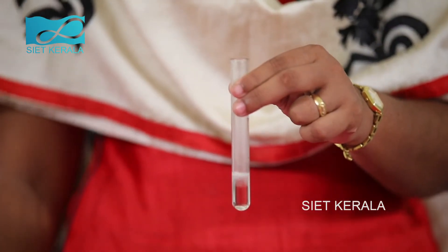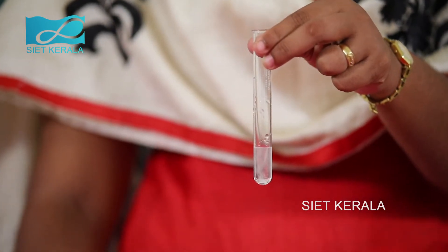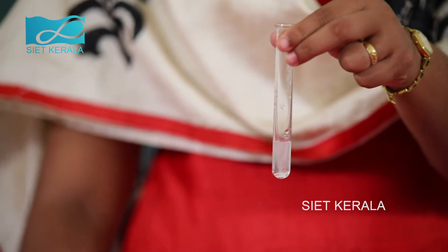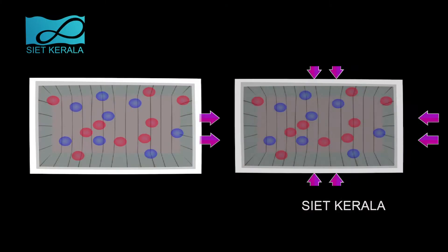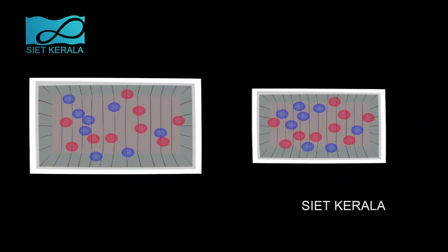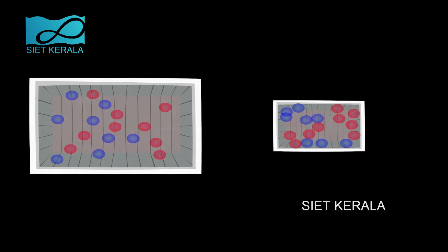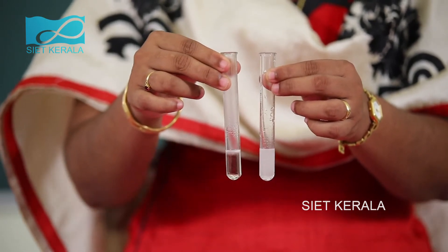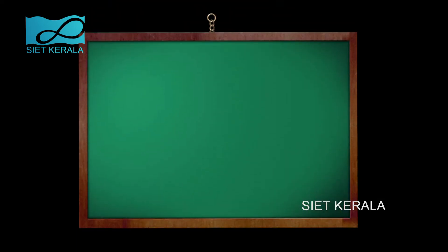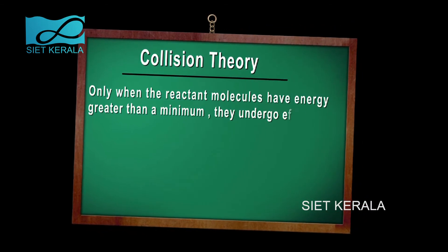Now we can see the reaction and gas is evolving from the two test tubes. In the first test tube, that is in concentrated hydrochloric acid, the reaction takes place very fast. And in diluted hydrochloric acid, that is in the second test tube, reaction is slow. From this experiment, we conclude that concentration of reactants influences reaction rate. When concentration of reactants increases, the collision between the molecules increases and rate of reaction increases.